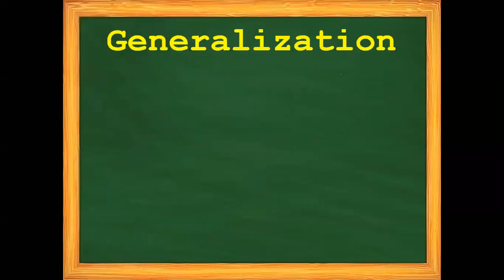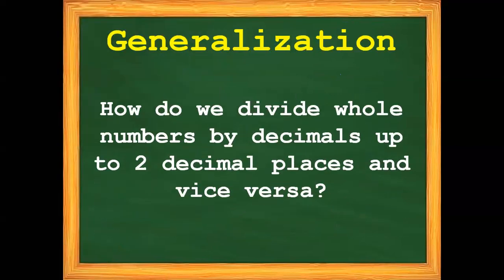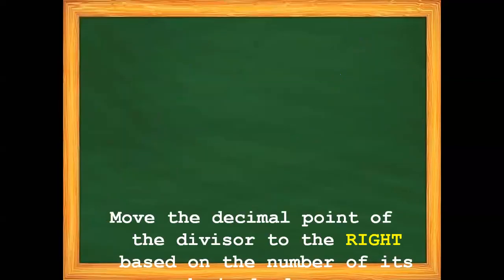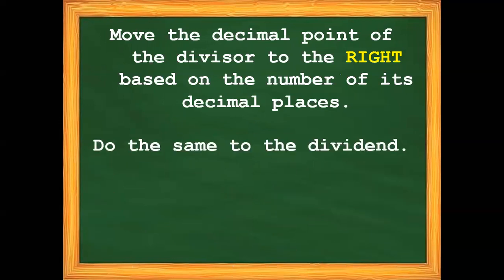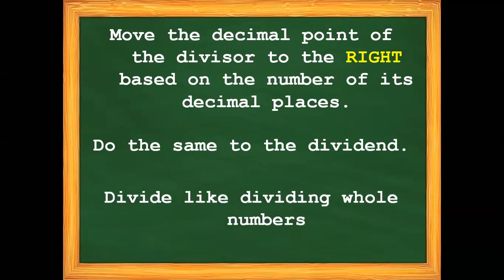Always remember how we divide whole numbers by decimals up to two decimal places and vice versa. Step 1: Move the decimal point of the divisor to the right based on the number of its decimal places. Step 2: Do the same to the dividend. Step 3: Divide like dividing whole numbers.